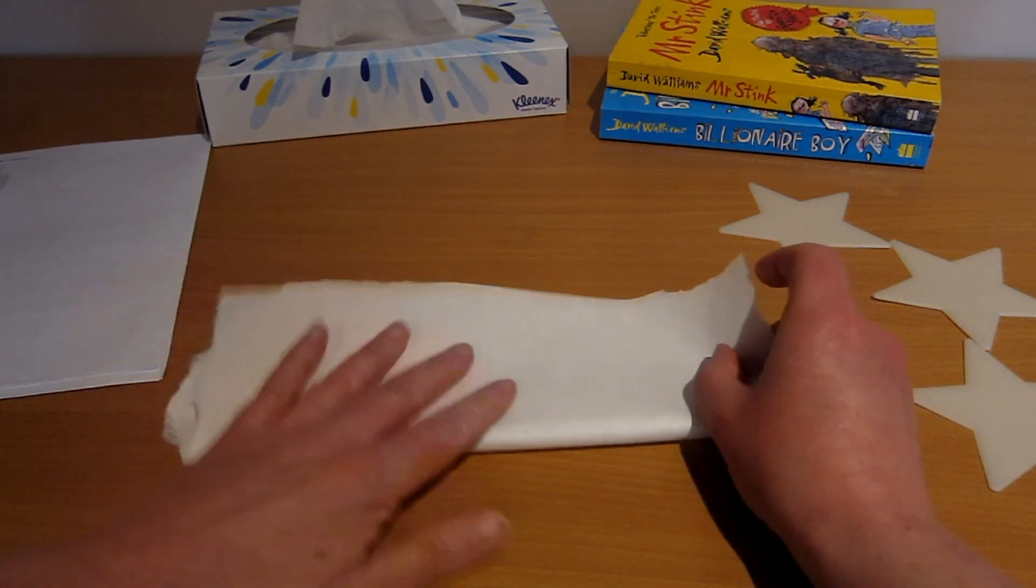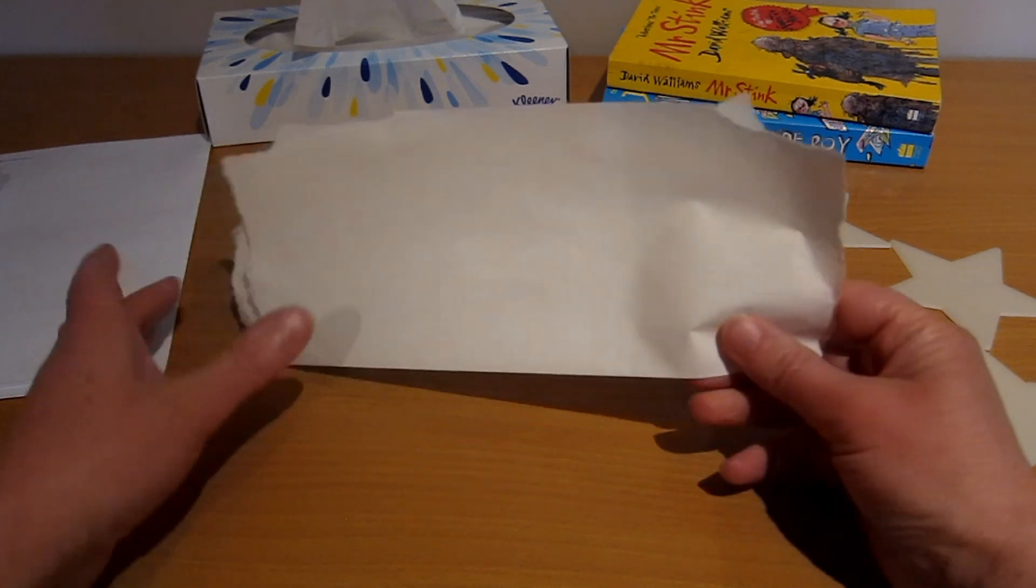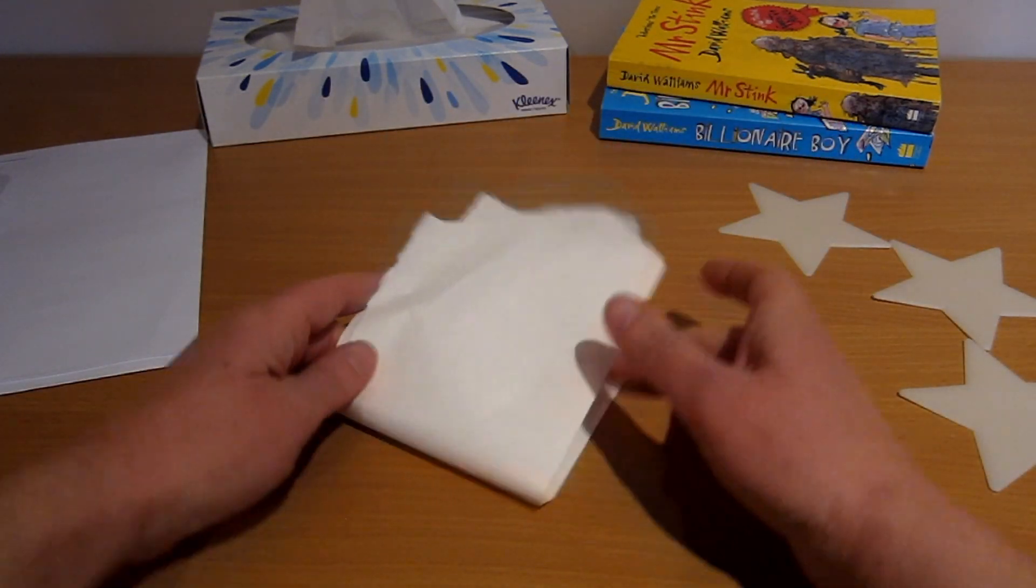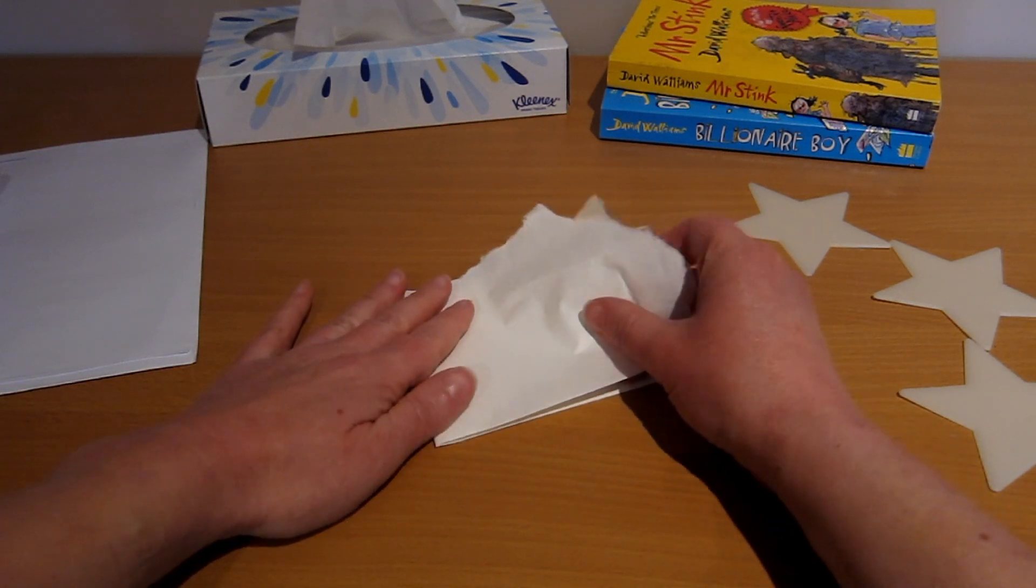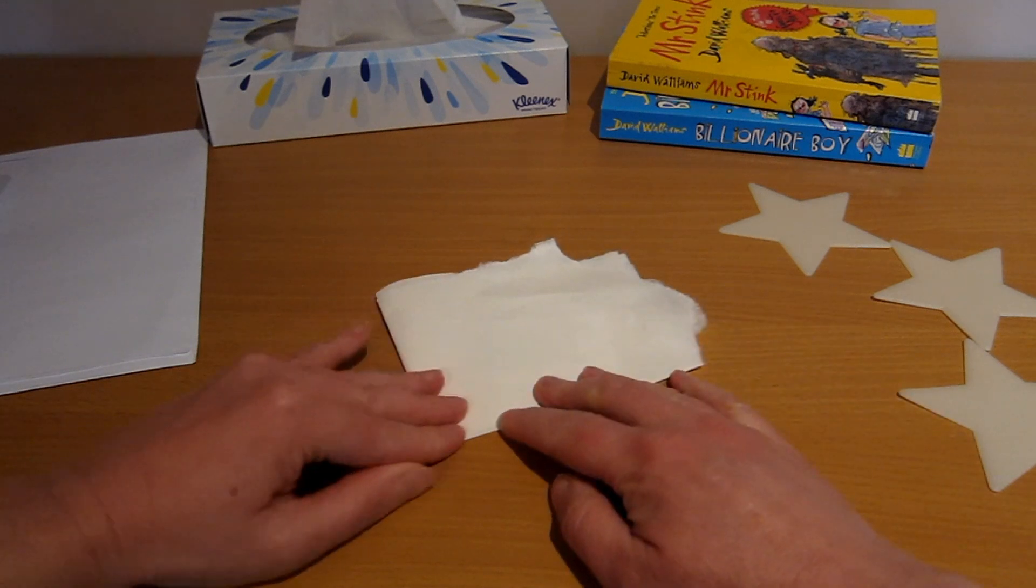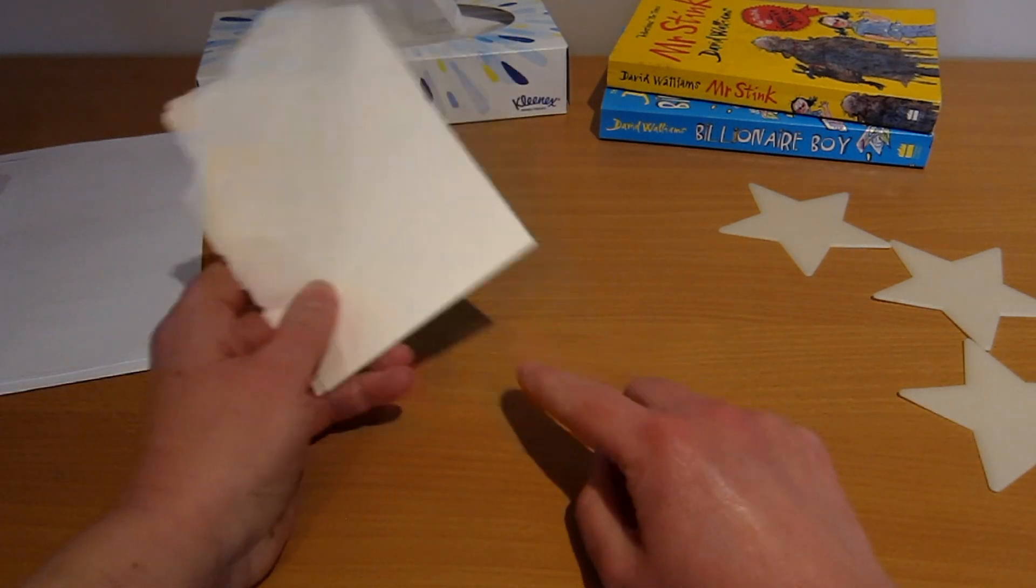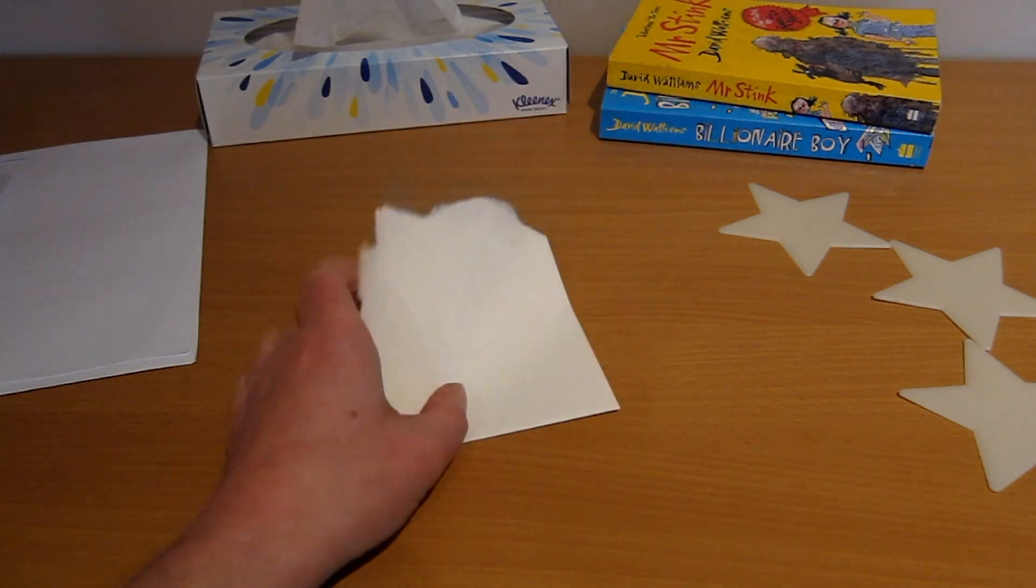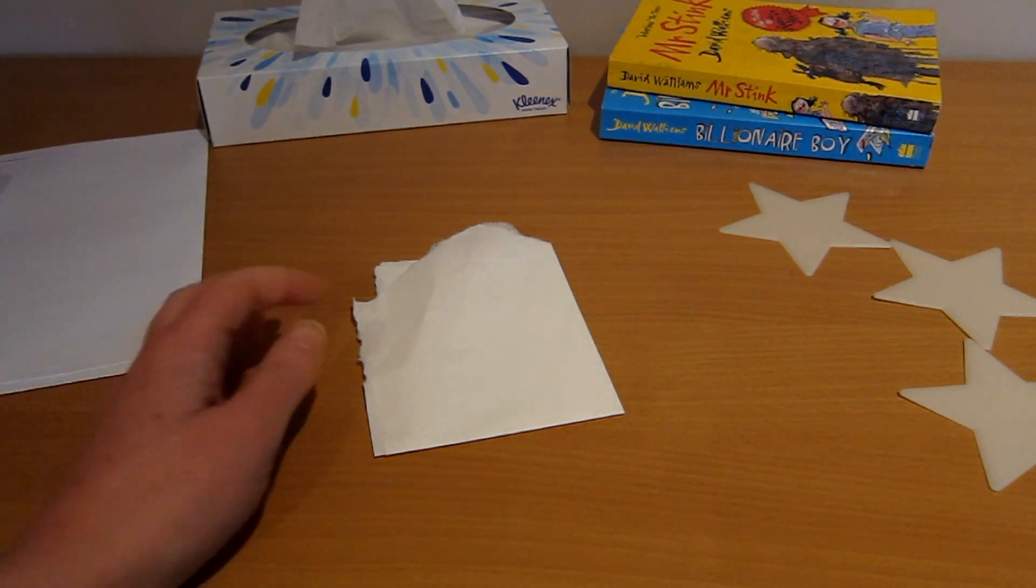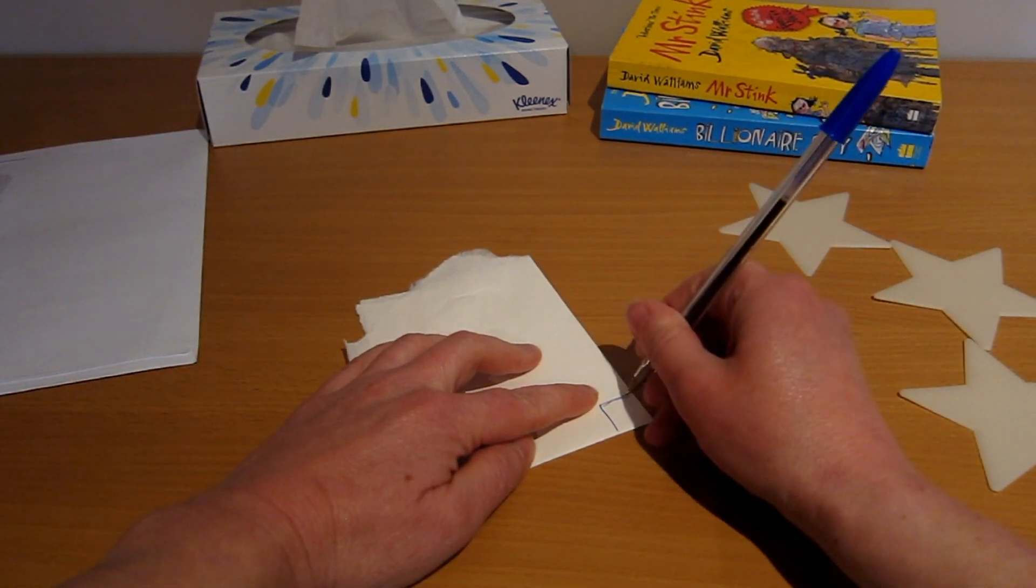First fold the paper in half, we've got a nice straight line there now and then fold it in half this way and make sure you line up that directly on that line. Then you have a perfect 90 degree right angle here.